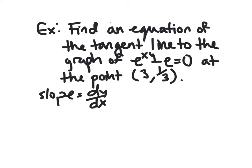So how do we do that here? Well, again, we want to implicitly differentiate. So e to the xy minus e equals 0. Do it to both sides. Well, e and 0 are constants. Those are going to remain 0. So it's really just dealing with e to the xy.